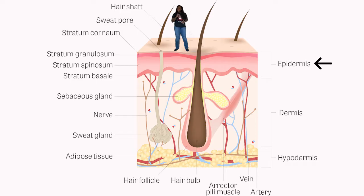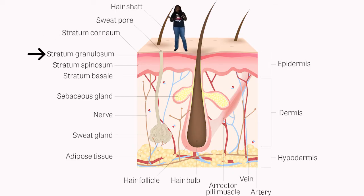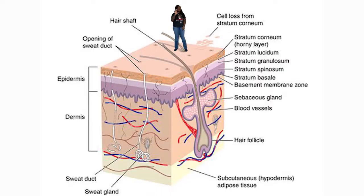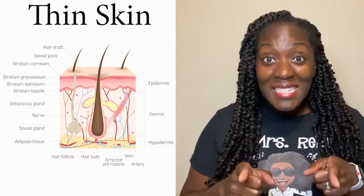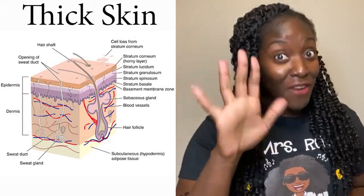The epidermis is the outer, thinner layer made up of epithelial tissue. In this picture, the epidermis has four layers: stratum corneum, stratum granulosum, stratum spinosum, and stratum basal. But the epidermis actually has five layers: stratum corneum, stratum lucidum, stratum granulosum, stratum spinosum, and stratum basal. Most of your body is covered in thin skin, but in the palms of your hands and soles of your feet you have thick skin. Thin skin has four epidermal layers and thick skin has five.